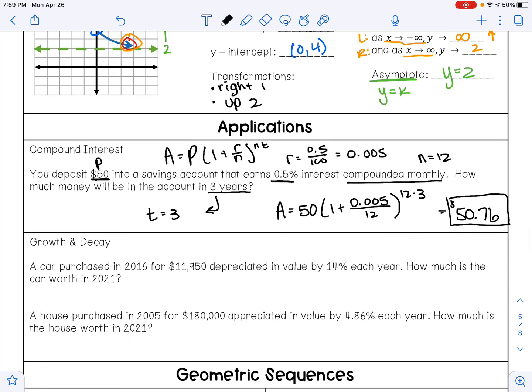And then we had growth or decay word problems. Here are those formulas where A equals P times (1 plus or minus R) to the power of T. Remember that this formula is not on your formula sheet, so on the milestone, this is a formula that you would need to memorize. A car purchased in 2016 for $11,950 depreciated in value by 14% each year. How much is the car worth in 2021?